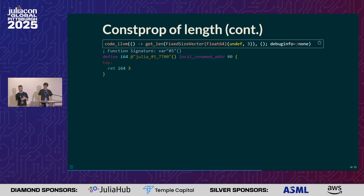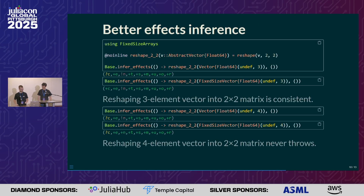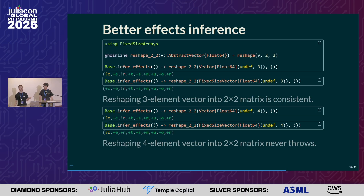These types of optimizations won't come up always, but they are the sort of thing that when you're building packages, it just makes it easier to write the code that you mean, and then the compiler will figure out what to do with it a lot of the time. You can also see that for a simple reshape case, we managed to prove with fixed-sized arrays that if you reshape a length-three array to size 2x2, we're able to show that this just throws an error, whereas for a regular array it's not consistent because the compiler doesn't know whether or not that will succeed. And also if you have a length four, we can prove that it doesn't throw an error, whereas for a regular array the compiler still doesn't know whether or not reshaping a length-four vector to a 2x2 matrix is valid.